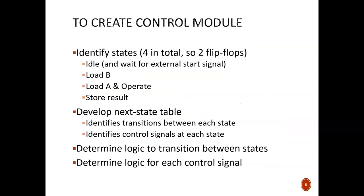The steps we will walk through are: first, identify our states. We noted three steps before each clock pulse; we add a fourth called the idle state, where we wait for addresses to be selected and the start signal to be activated. Four total states means we only need two flip-flops to record which state we are in. Next, develop the next state table identifying transitions between states, then identify which control signal to send out for each state, and finally determine the logic for state transitions and each control signal.